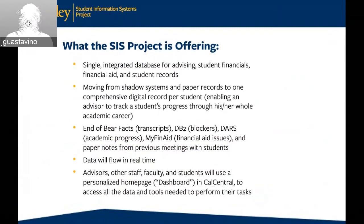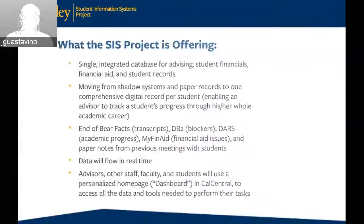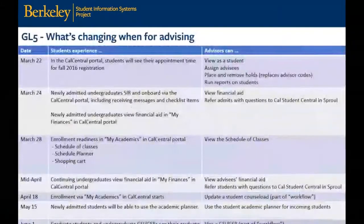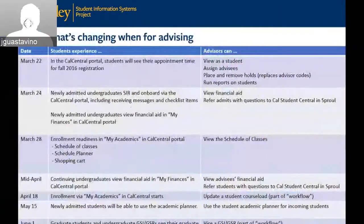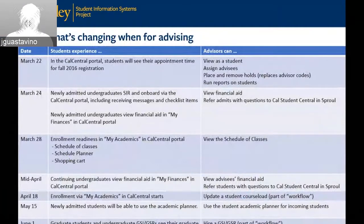Students will be getting a dashboard, and staff and faculty will be getting a dashboard in Cal Central. This is a chart that many of you have seen on the academic advising training web page. It shows the student experience, what advisors are going to be able to do, and what the dates are for each of these. You can review this in more detail on the training website.